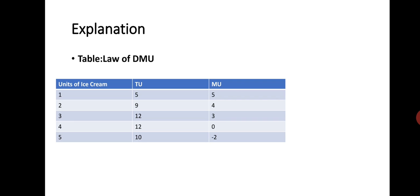We can explain this law with the help of a table and diagram, taking the example of consuming ice cream. The first column has units: first unit, second unit, third unit. The second column has total utility, and the third column has marginal utility. As we consume the first unit, total utility is 5 and marginal utility is 5. As the second unit is consumed, total utility rises to 9 — that is, an additional 4 — and marginal utility is 9 minus 5, which is 4. When the fourth unit is consumed, total utility goes to 12 and marginal utility goes to 0, since 12 minus 12 equals 0.